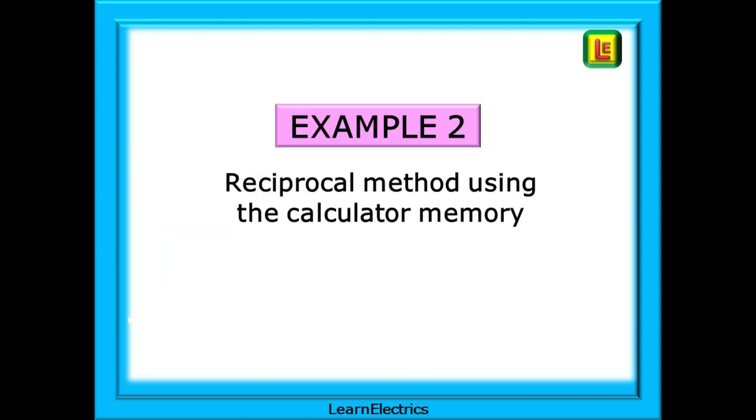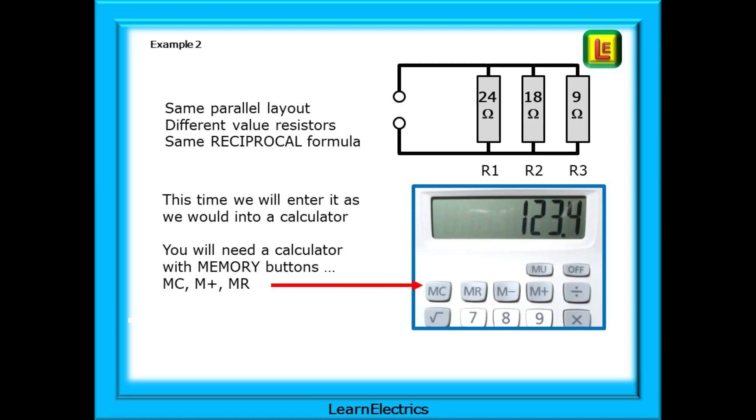Many people struggle with getting the numbers into a calculator. So, we will look at a reciprocal question and go through step by step which calculator keys should be used. We have the same parallel layout as before, but with different value resistors. But, we will use the same reciprocal formula as before, and this time we will enter it as we would into a calculator. You will need a calculator with memory buttons, as shown here, memory clear, memory plus, memory recall. In the exams, you will not be allowed to use your mobile phone or any other smart or internet device. Invest in a handheld calculator with the memory keys on it, and get used to using it now, so that by the time of your exams, you are familiar with how it works.